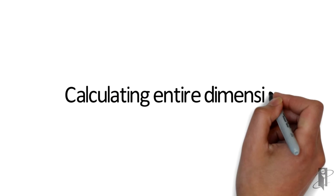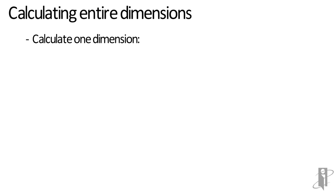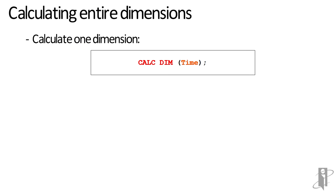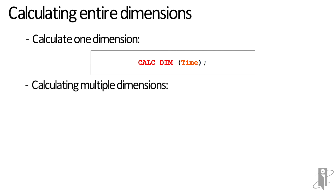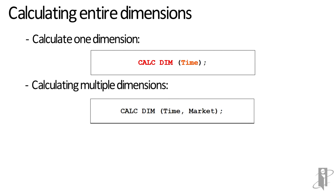If we wanted to calculate an entire dimension, we would just say calcdim time. In my case, time is a stored dense dimension, so I can't use the ag command, but I can say calcdim time. If I have a stored dense dimension in time and a stored sparse dimension in market and I want to aggregate both at the same time, I can do calcdim time, market.